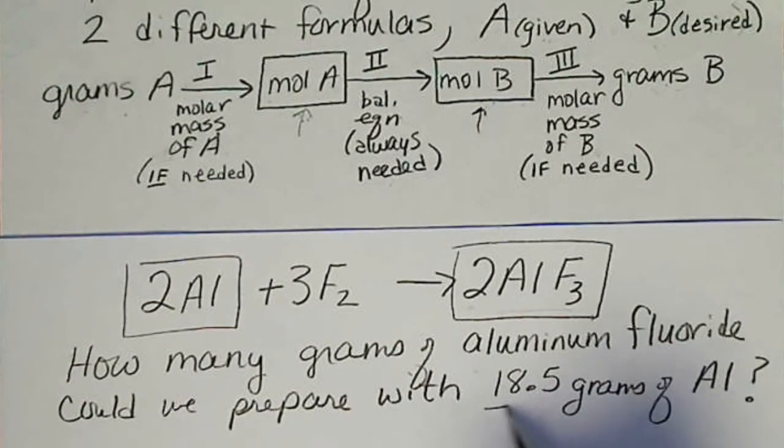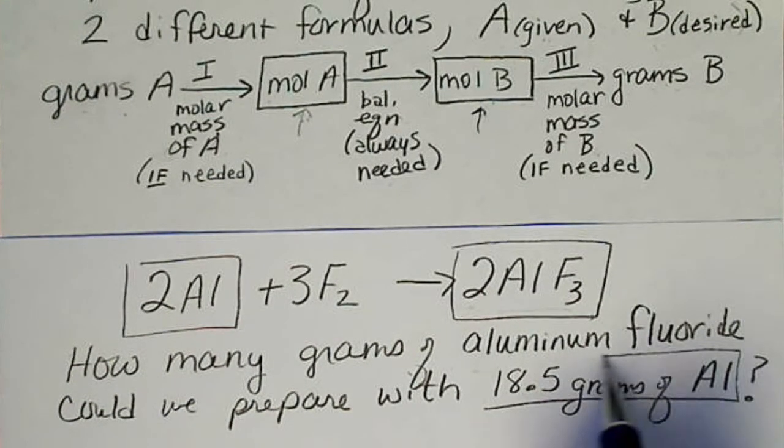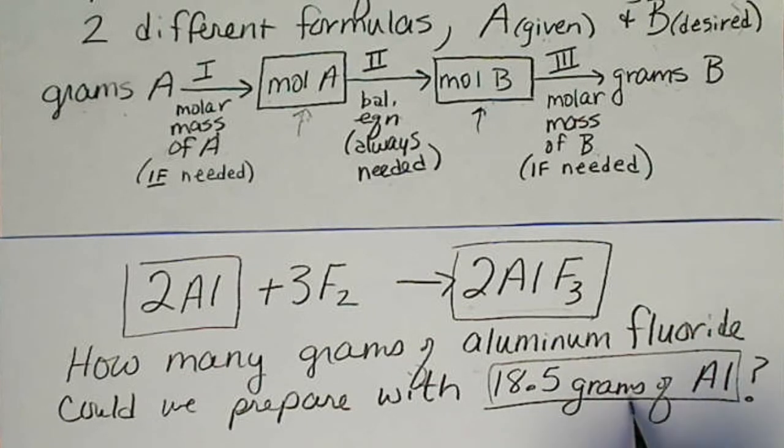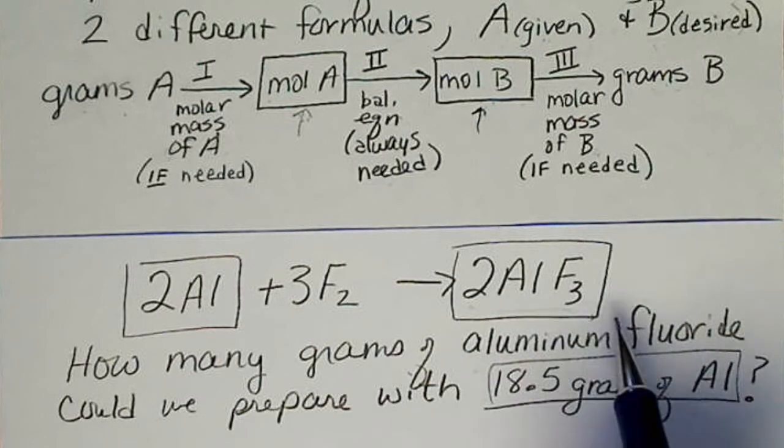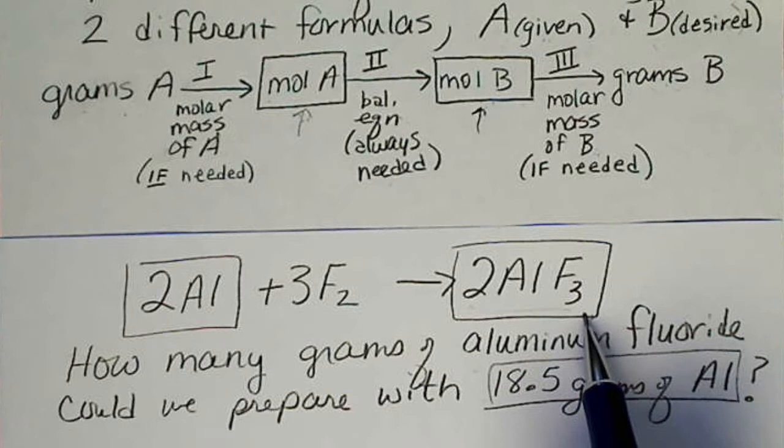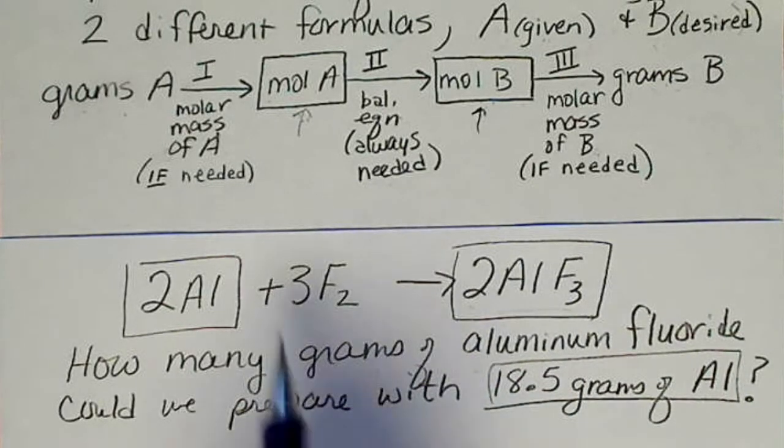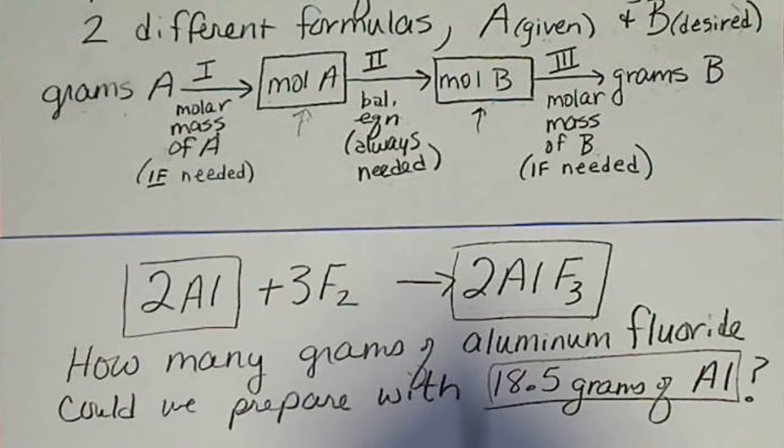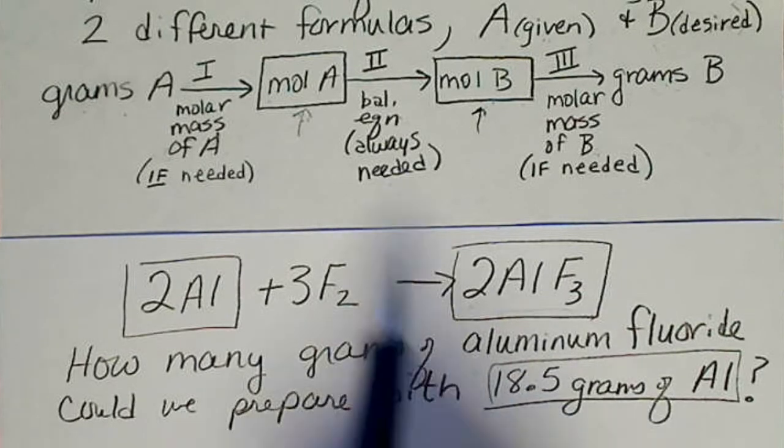So our aluminum is A. We're given information about aluminum, and we're asked for information about aluminum fluoride in grams. So we'll use step one, the molar mass, to convert grams of aluminum to moles.